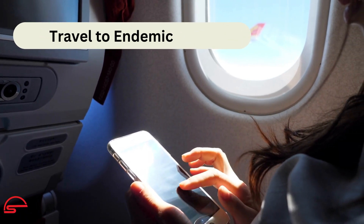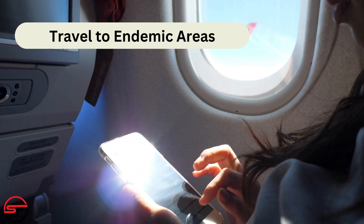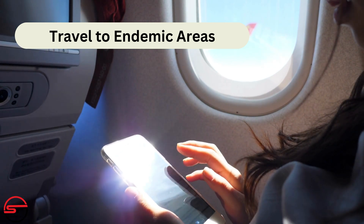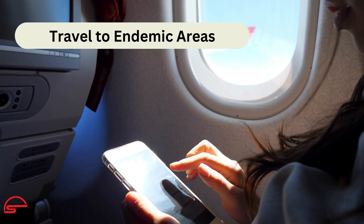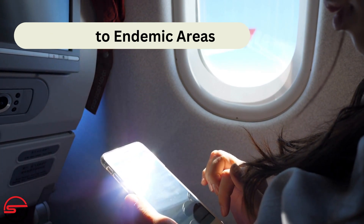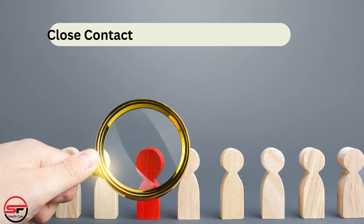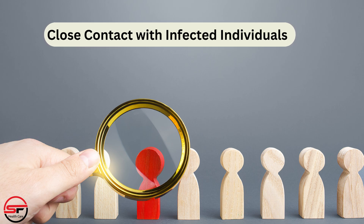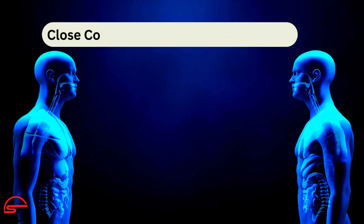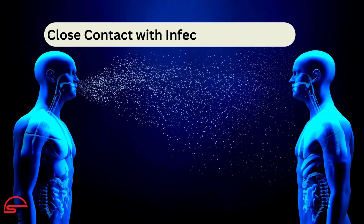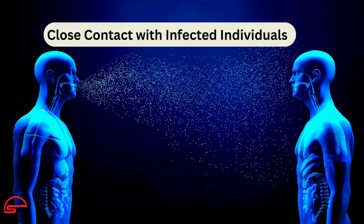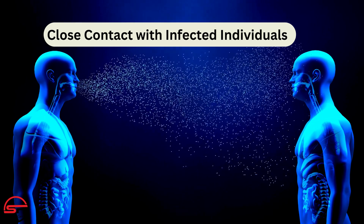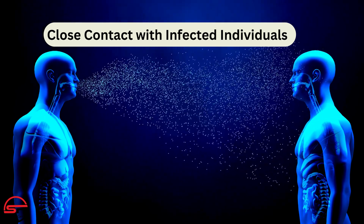Travel to endemic areas: traveling to regions where typhoid fever is prevalent, especially areas with inadequate sanitation and hygiene standards, increases the risk of exposure. Close contact with infected individuals: typhoid bacteria can also spread through close contact with an infected person, including if an infected person handles food that is later consumed by others.